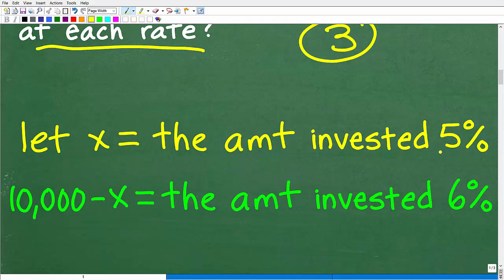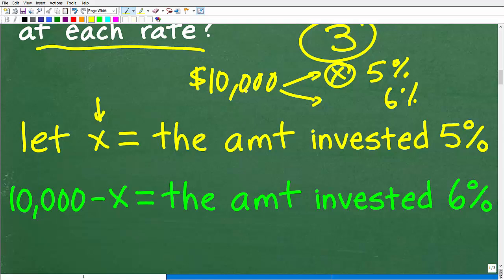So I'm going to let X equal the amount he invested, Lou invested at 5%. Now, X could also represent the amount he invested at 6%. It really doesn't make that much of a difference. But I'm going to let X equal the amount he invested at 5%. Now, if he invested X dollars, remember, he has a total of $10,000. If he puts X dollars into the 5% investment, well, how much money is he going to put into the 6% investment? Well, he's going to have to subtract away this amount he put into the 5% from 10,000. So 10,000 minus X is what he put into the 6%.